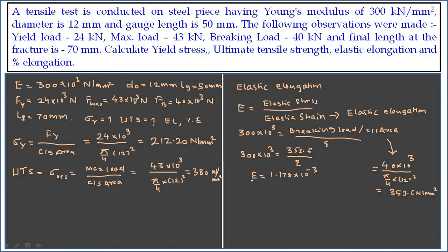Now we need to calculate the percentage of elongation. We need to take the change in length divided by original length. So percentage elongation is equal to change in length divided by original length.